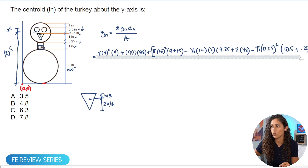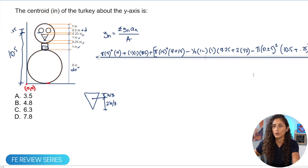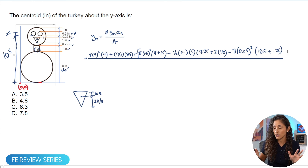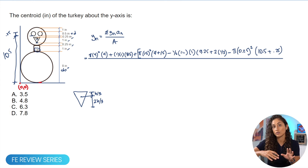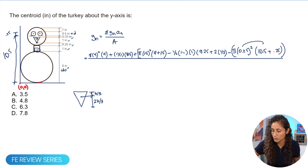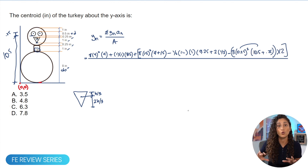Since both small circles are identical and at the same distance, we can simply multiply that term by 2 instead of rewriting it twice.